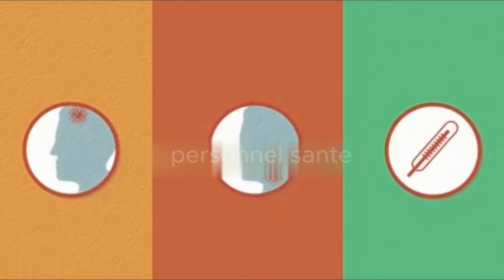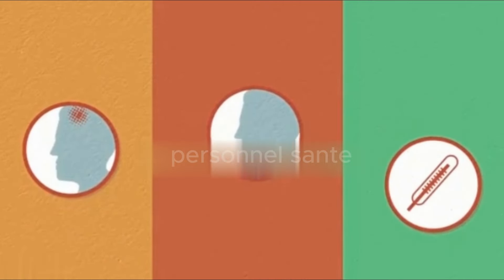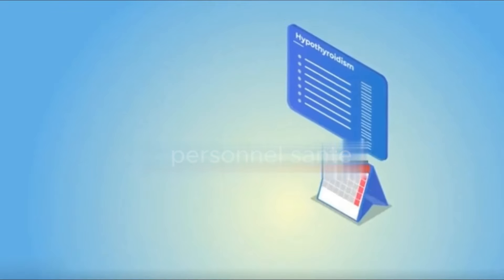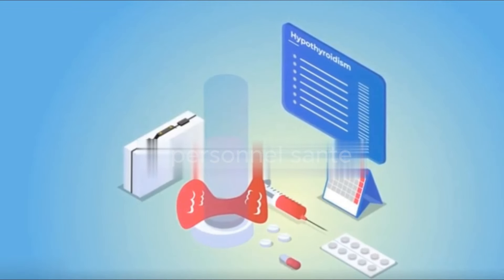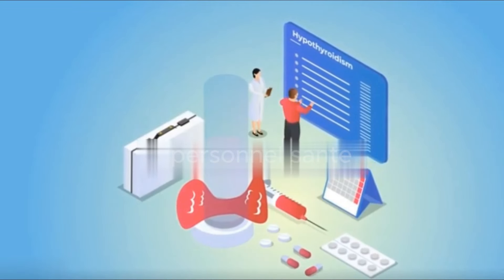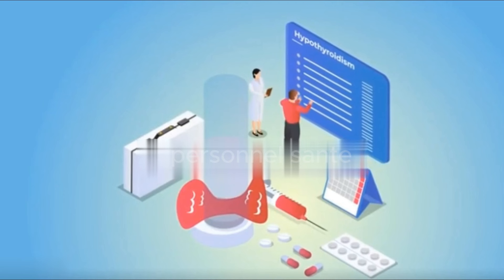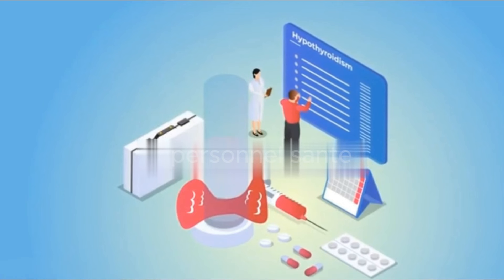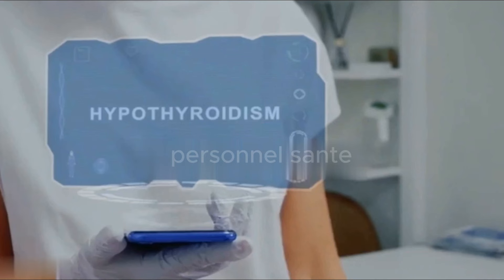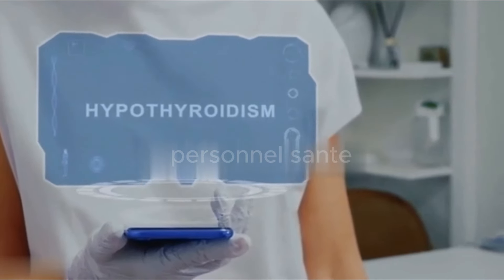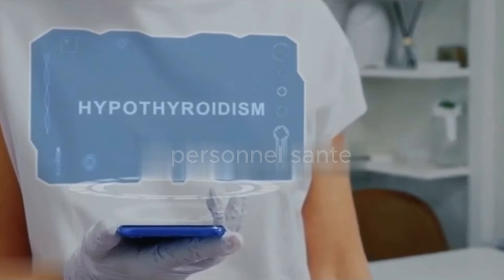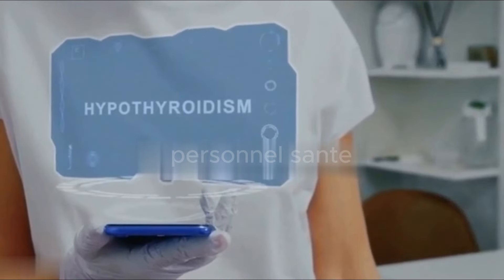Additionally, the thyroid affects skeletal muscles by playing a role in the synthesis of myosin, a crucial molecule. Smooth muscles, such as those involved in intestinal motility, are also influenced. In summary, the thyroid impacts many anatomical structures throughout the body.